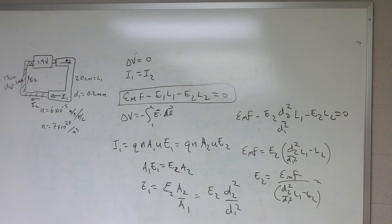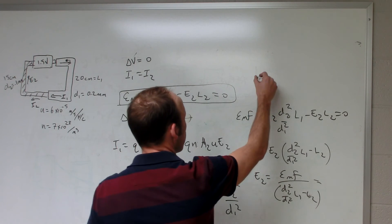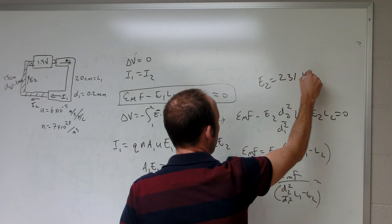Okay, so I get EMF 1.5 volts divided by D2, which is going to be 0.2 divided by 0.1, all of that squared. And then I have to multiply by L1, which is 0.2 centimeters, and then I have to subtract L2, which is 0.15. And I get 2.3, see, I'm back. So E2 equals 2.31 volts per meter.